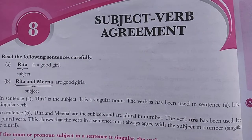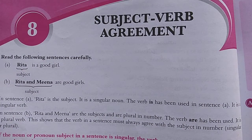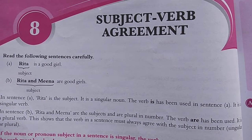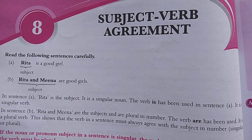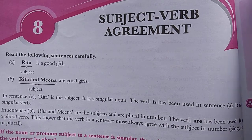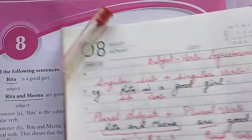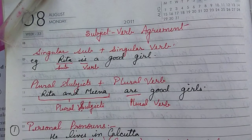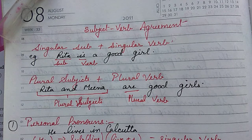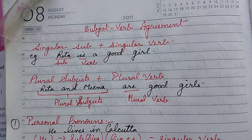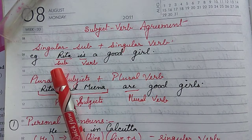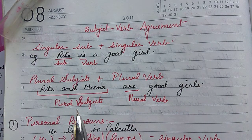In this video, I will explain subject-verb agreement — what rules you will follow when the subject is singular or plural, and how you will use the verb. I have written some statements for you so that you can understand. It is also given in the book; you can go through the examples. Let us start with the first rule: when the subject is in singular form, you have to use a singular verb.